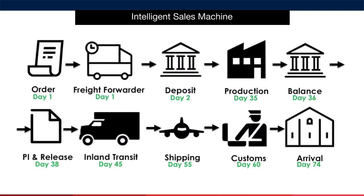When the supplier receives the balance payment, they'll release the goods on approximately day 38. By day 45, your items should have been collected and transported to the airport. By day 55, the items should have been shipped by air and have arrived into the destination country. The goods should then clear customs by day 60. The freight forwarder would have had you pay the appropriate customs charge by then, as well as any import taxes. You could then expect arrival into Amazon by approximately day 74 using this method.